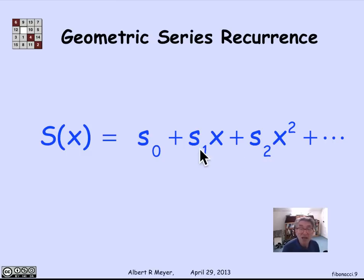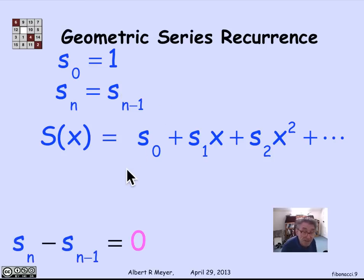But to illustrate the pattern, I'm calling them S0, S1, S2. Then the recurrence relation is that S0 is 1, and Sn is equal to Sn minus 1. That's what guides me to say that the recurrence then can be reformulated as saying that Sn minus Sn minus 1 is equal to 0.